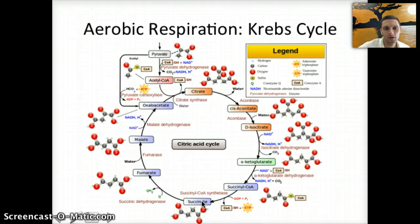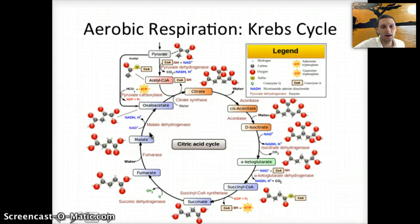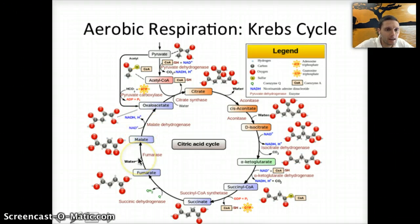This four-carbon succinate molecule goes through a few more steps and eventually becomes oxaloacetate. During that process, a single ATP molecule is produced — phosphate is added to ADP to produce one ATP. An NADH is also produced, as is an FADH2 molecule. These NADH and FADH2 molecules are what will be used in the electron transport chain. There is very little ATP being produced here, so this is not where we see the majority of ATP being made.